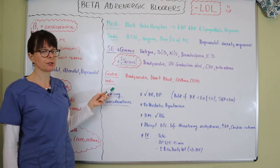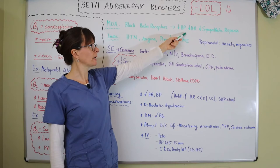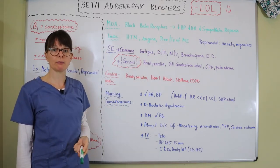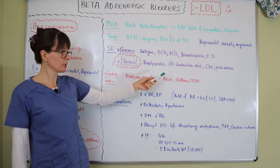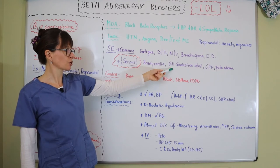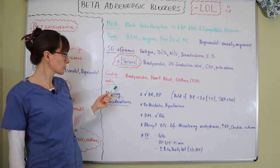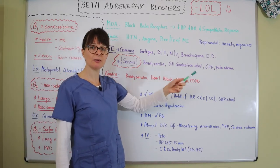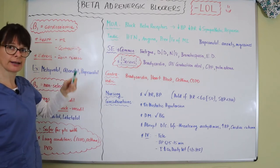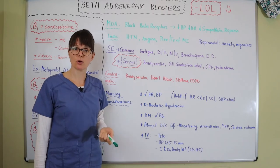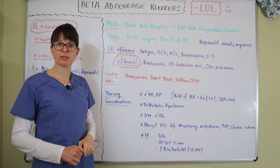Contraindications include existing bradycardia, since blocking beta receptors would drop the heart rate further and make the patient symptomatic. Beta blockers are also contraindicated in patients with heart block, as they can worsen AV conduction abnormalities — heart block typically presents with a heart rate below 60, less than the intrinsic SA node rate. They are also contraindicated in asthma and COPD due to the non-selective beta 2 effects, though in select cases a cardio-selective beta 1 blocker may be prescribed after provider discussion of risks and benefits.